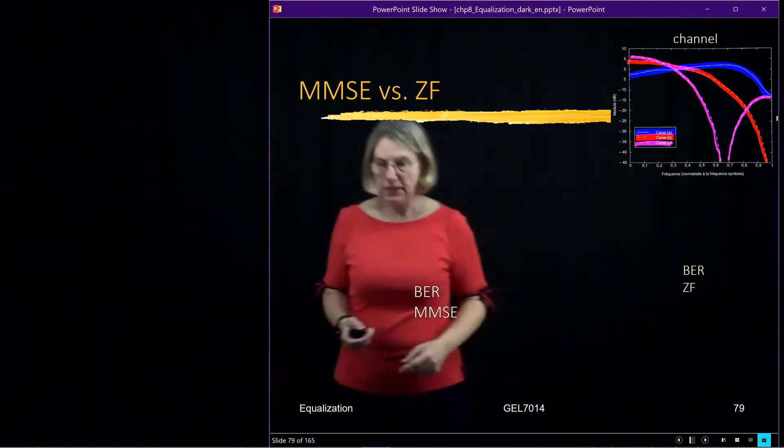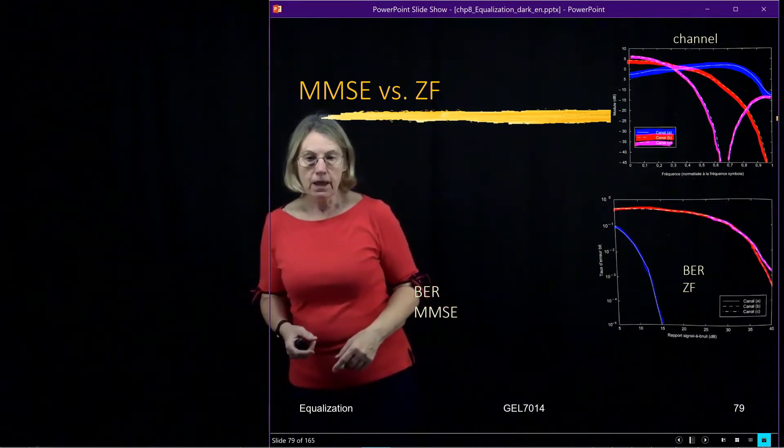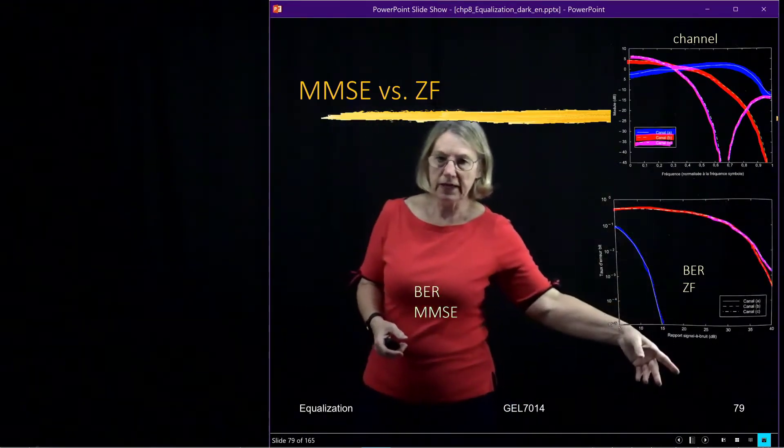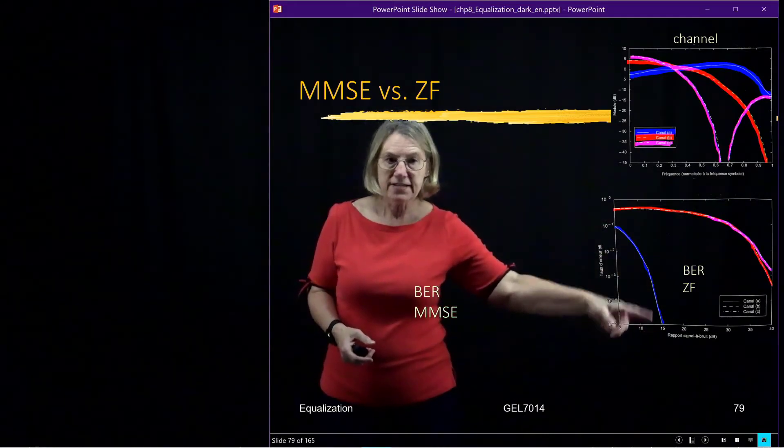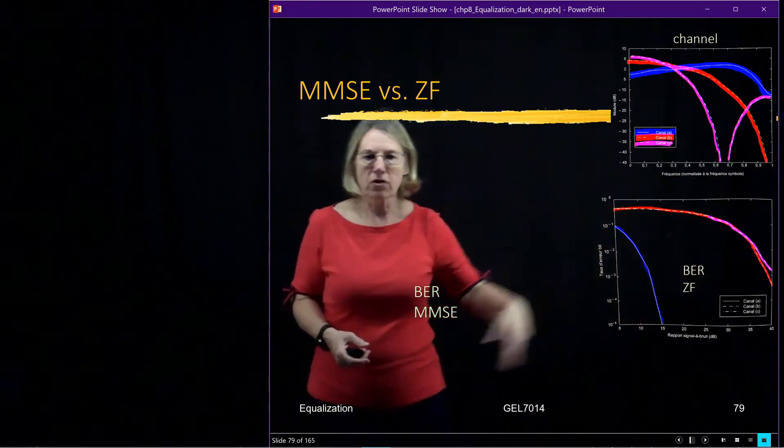So let's look back at what we had for the BER for the zero-forcing. And we saw that the blue was pretty easy to equalize, but the red and the pink were both pretty bad.